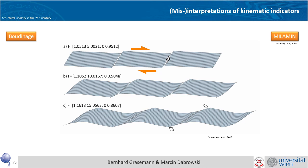In a model with dextral simple shear, you see the boudins rotating into a dextral orientation, but the boudins are internally deforming, creating not an A-type flanking structure but a very nice sigmoidal shape. This might easily be confused with shear band boudinage created during sinistral shear, but remember these numeric models were run in dextral shear.